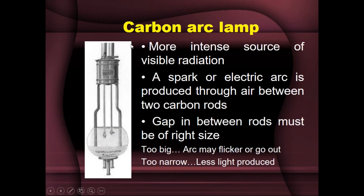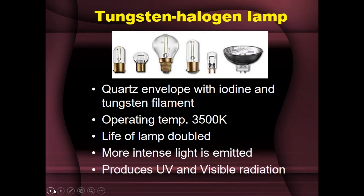The second lamp giving visible light is the carbon arc lamp — a more intense source of visible radiation. An electric arc is produced through air between two carbon rods placed very close to each other; with a potential difference between them, an electric arc is produced, and that arc is the visible radiation being emitted. The gap between the rods must be of sufficient size — too large and the arc flickers or goes out; too narrow and less light is produced. This is used only when very high-intensity visible radiation is needed; otherwise, the tungsten lamp is the lamp of choice.